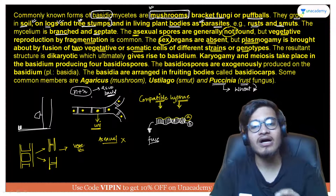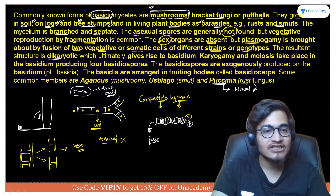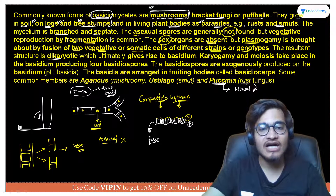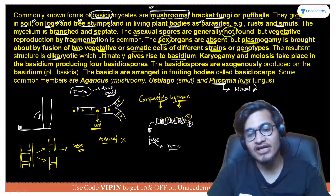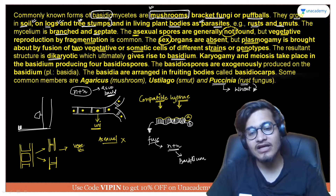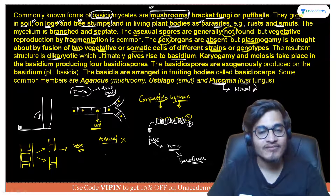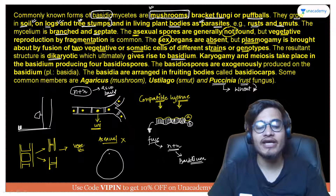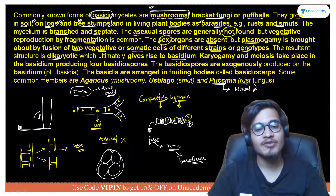This dikaryotic stage ultimately gives rise to the basidium. Here, the n+n stage forms, which gives rise to the basidium — a container-like or sack-like structure in which basidiospores are present. The fruiting body contains many spore-containing structures.